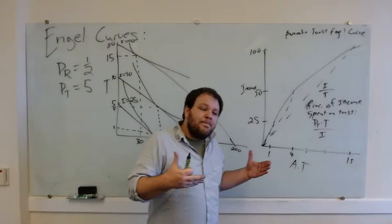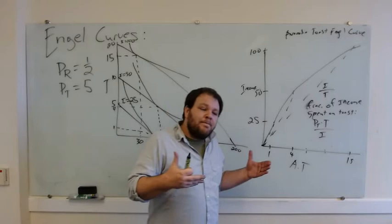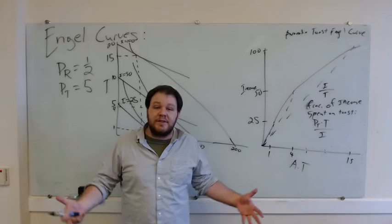Now, there's another type of normal good, of course, which is a good where we increase the amount that we buy as we increase our income, but not as quickly as our income. We're going to call this a necessity good, and it's going to have an increasing slope of our Engel curve.